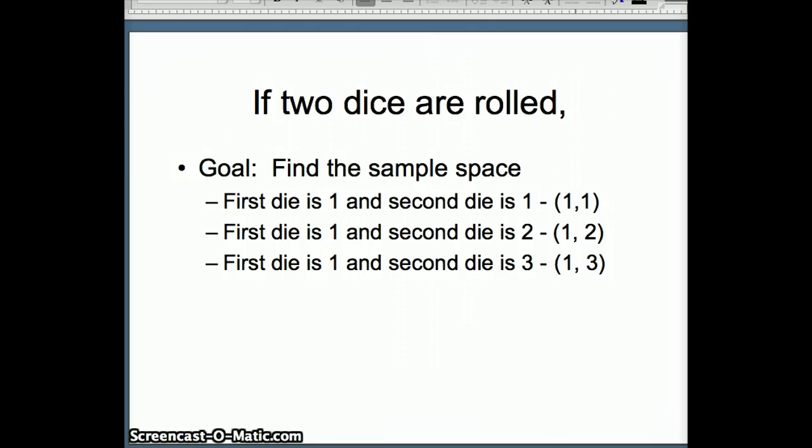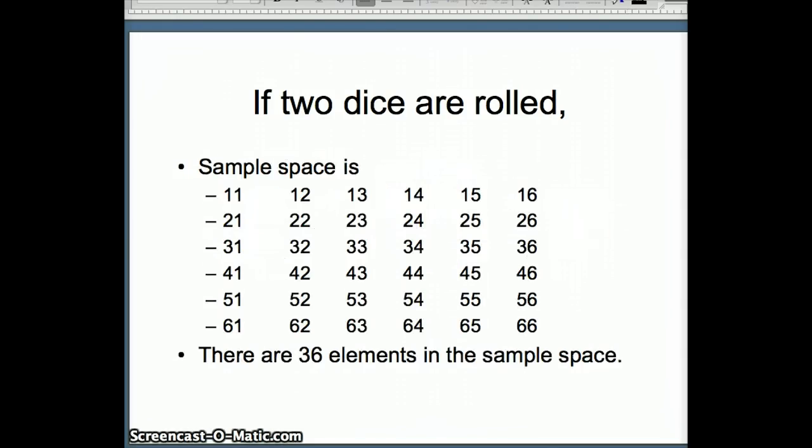Now, we can go for all of our cases where the first die is 1, there would be six possibilities. If the first die is 2, there are six possibilities. If the first die is 3, there are six possibilities. So you can see that we have several possibilities in our sample space.